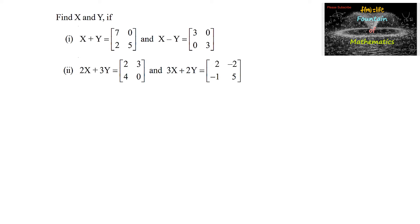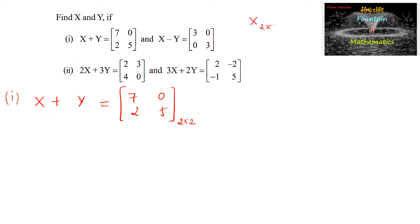Find matrices X and Y if X plus Y is equal to [7, 0; 2, 5] and X minus Y is equal to [3, 0; 0, 3]. Since the sum of two matrices is a 2 by 2 matrix, we can say X is a 2 by 2 matrix and Y is also a 2 by 2 matrix. The difference X minus Y is also a 2 by 2 matrix.